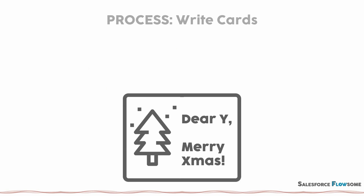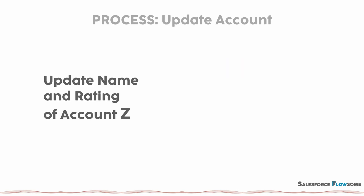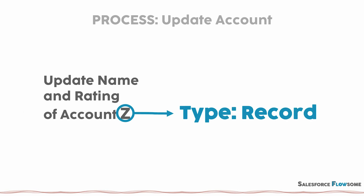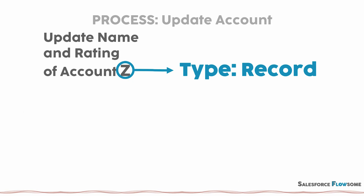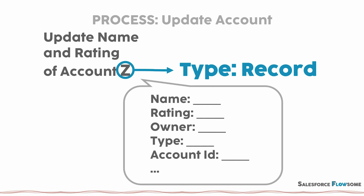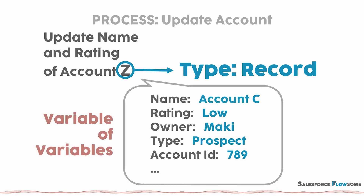For another example, if you are writing Christmas cards with the same content to your family, the y here is a text type variable. Then things become interesting when looking at the record type variable. So if we look at this process to update an account, we want to update the name and the rating for account Z. We don't know which account it is yet, but we know that there will be a name field and a rating field and the values are dependent on which account it is. I call this a variable of variables.